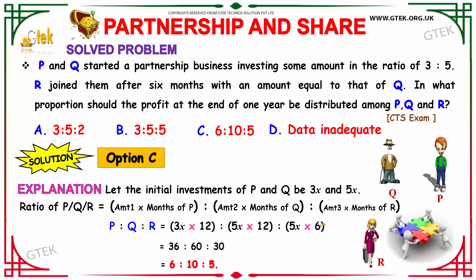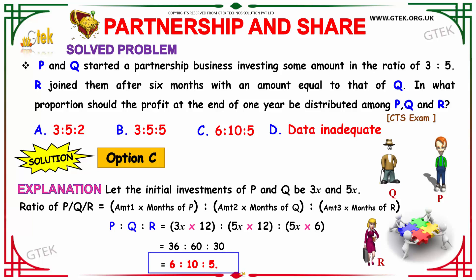The number of months are 12, 12, and 6 respectively. Removing X, we get: 3 into 12 is 36, 5 into 12 is 60, and 5 into 6 is 30. Simplifying, the ratio is 6:10:5. That is the profit-sharing ratio for P, Q, and R.